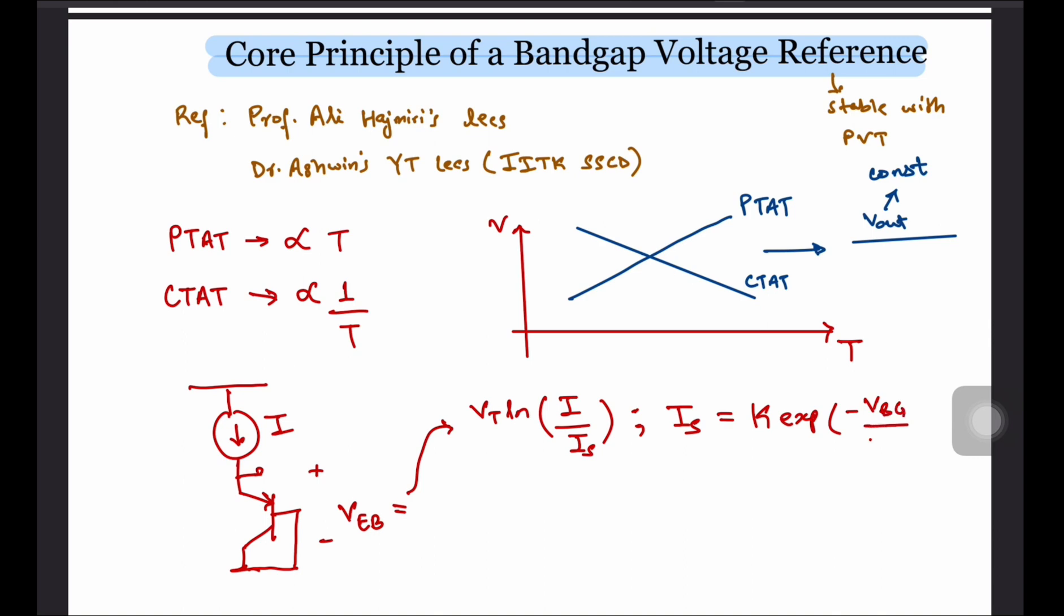Cutting out that part of the algebra, the point is that IS can be expressed as some constant K times exponential minus VBG by VT, where VBG is the bandgap voltage of silicon. Plugging that in, we have VEB equals to VT ln I over K plus VBG.